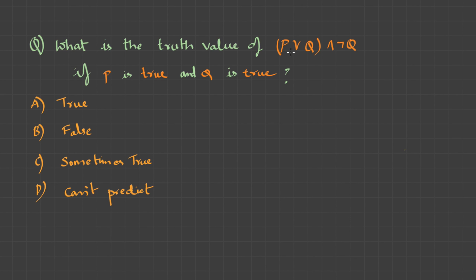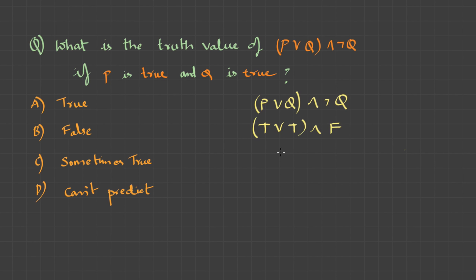What is the truth value of P OR Q AND NOT Q, if P is true and Q is true? Let's write the statement: P OR Q AND NOT Q. Substituting: TRUE OR TRUE AND NOT TRUE. NOT TRUE is FALSE. TRUE OR TRUE is TRUE. TRUE AND FALSE is FALSE. So the answer is false — option B.